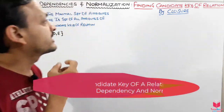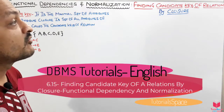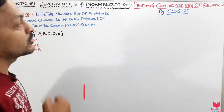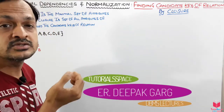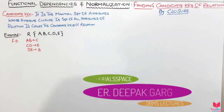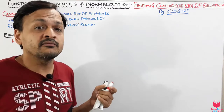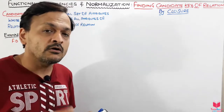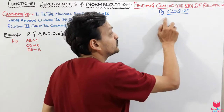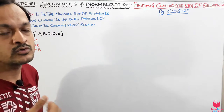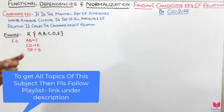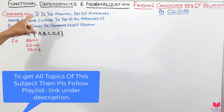Today we will discuss finding candidate keys of a relation by closure. This is quite an important concept which comes under normalization — we have to find the candidate key. There may be one, two, or many candidate keys; we have to find all possible candidate keys from the relation using only the closure concept of functional dependencies and attributes.